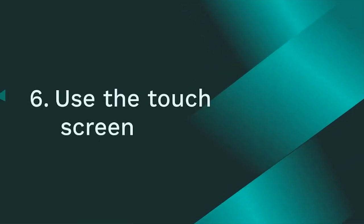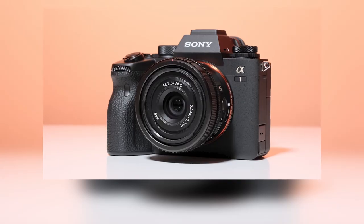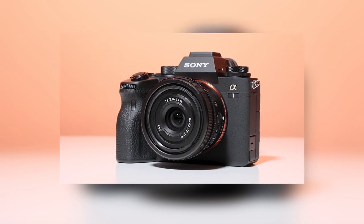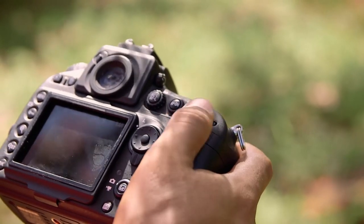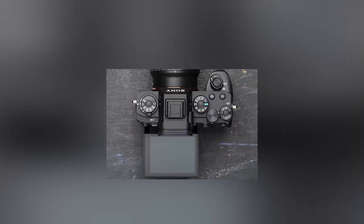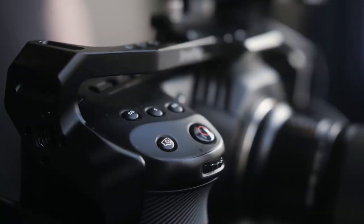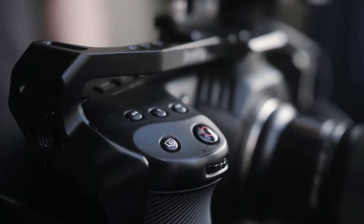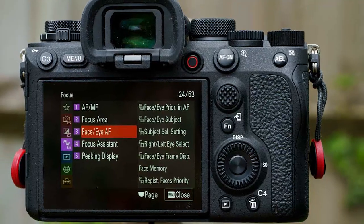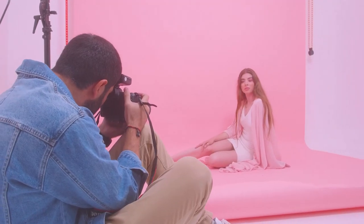Number 6: Use the touchscreen. Every second counts when you're trying to capture that perfect shot. That's why the touchscreen feature on the Sony A1 camera is such a game changer. With just a tap or a swipe, you can quickly adjust settings and navigate the menu, making shooting more efficient than ever before. Gone are the days of fumbling through a maze of buttons and menus. Not only does the touchscreen save you time, but it also allows you to be more precise in your adjustments, giving you complete control over each setting.